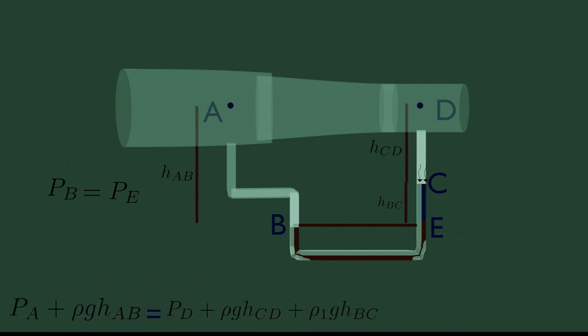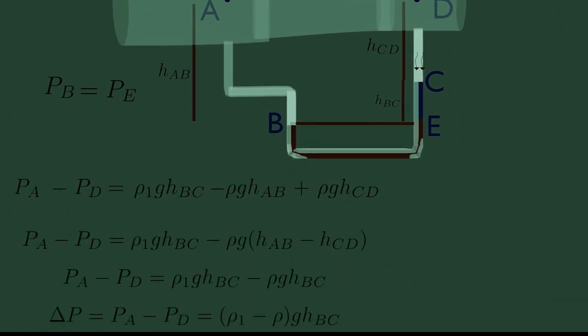Now, combining these two pressure equations and solving them we will get the final equation. This result represents the difference in either the absolute or the gauge pressures between points A and D. Look, by measuring the height of the column HBC, or HCE, of liquid, we can easily get pressure difference.